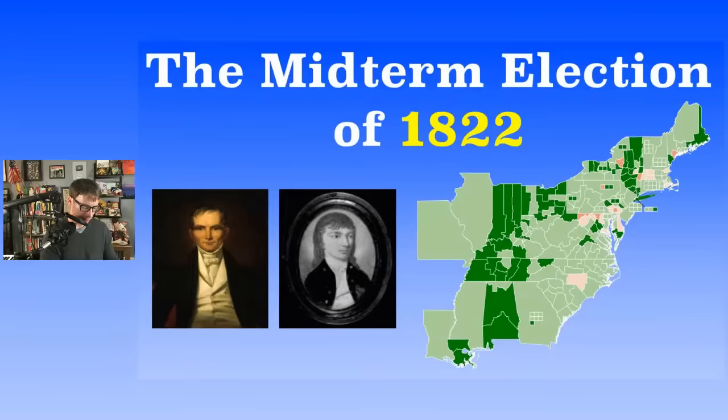In the Senate, president pro tempore is John Gaillard again. On the left, Philip Barbour was the Speaker of the House in 1822 — he was a Supreme Court Justice later. We're going to see the end of what's known as the first party system here soon, because you're going to see the emergence of a new kind of candidate.